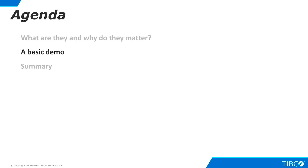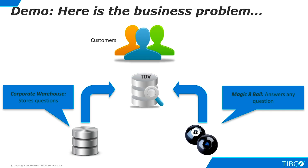Let's walk through a very basic demo that shows the use of a custom Java procedure. This company earns revenue by answering questions asked by its customers. To answer these questions, the company has developed a Magic 8-Ball application, which can provide an answer to any question. The questions themselves are stored in a corporate data warehouse. This company would like to use TDV to provide a federated view of questions and answers. However, the Magic 8-Ball application does not provide any type of standard interface, such as JDBC, ODBC, ADO.NET, OData, or Web Services, that would allow TDV to access it as a standard data source. We'll use a custom Java procedure to integrate the Magic 8-Ball with TDV.